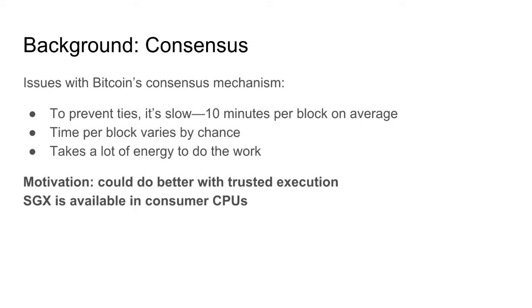So what's the problem with Proof of Work? First off, with the current version we use in Bitcoin, it takes about 10 minutes. Additionally, you have to do a lot of work, it takes a lot of energy, and the computation that we're doing is completely meaningless — there's no reason for it. It's just wasted, just to get a nonce that gets us the exact value to match the difficulty at that given time.